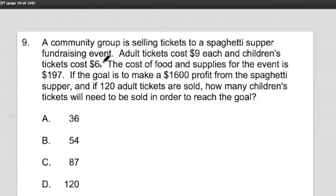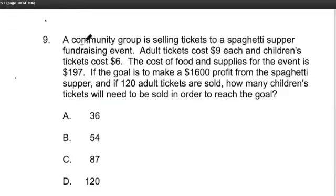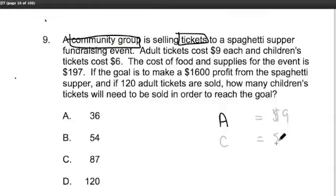Okay, now you've read it over. I'm hoping that you're practicing this idea of visualizing here. So there's this community group and they're selling all these tickets — this is big for a big event. Now there are adult tickets, and adults' tickets cost $9. And the kids, their tickets cost $6.